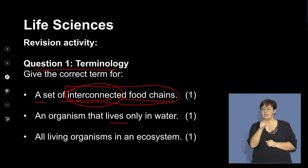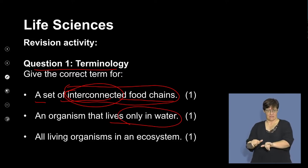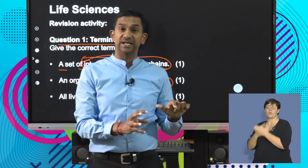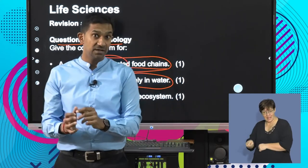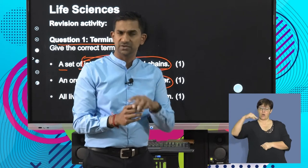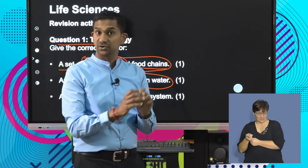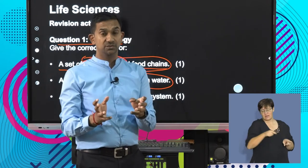An organism that lives only in water. It's important that we recognize organisms that live on land and those that live in water. The ones that live on land we refer to as terrestrial organisms. The ones that live in water we refer to as aquatic organisms. So life forms exist on land, which are terrestrial, as well as in water, which are aquatic.